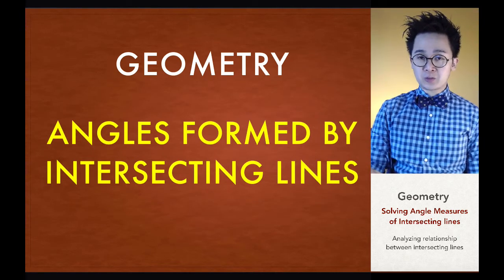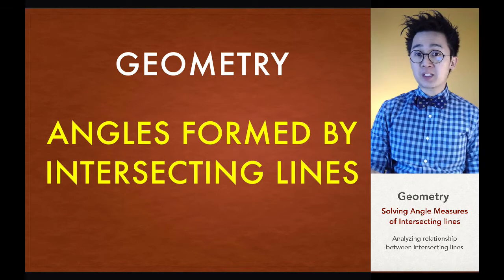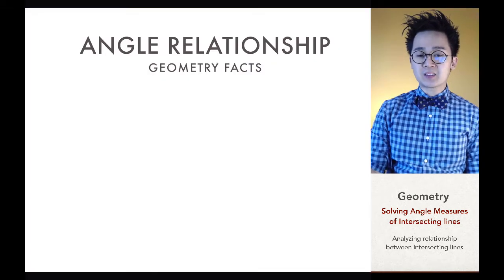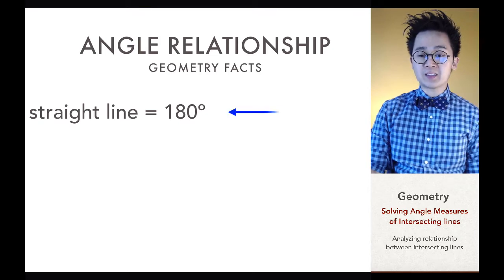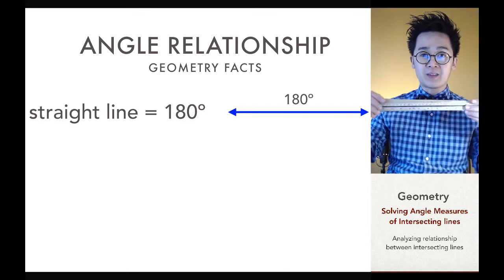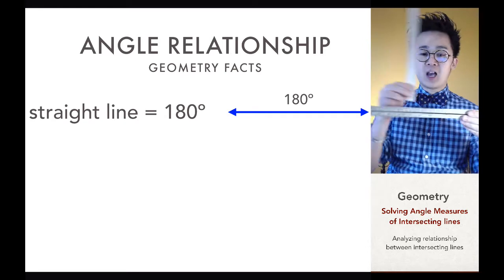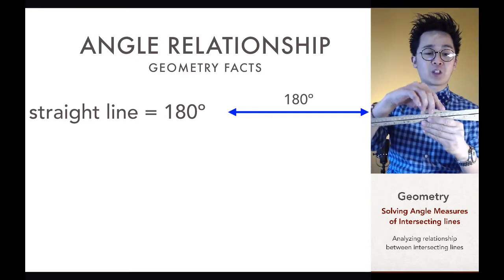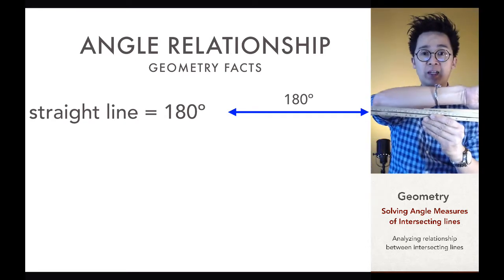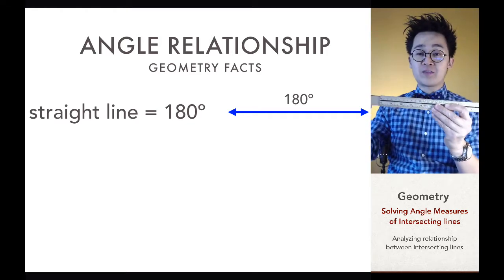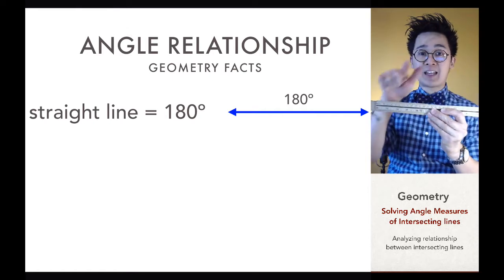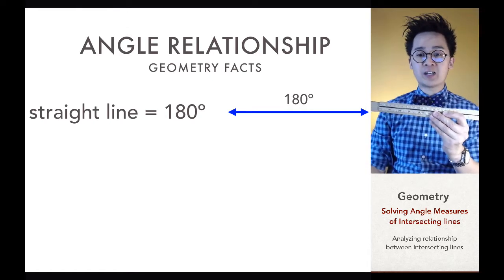The first thing we need to know to work with angle measurements between intersecting lines is some geometry facts, like the measurement of the angle of a straight line. For a straight line, it equals 180 degrees — if we rotate a line from one end to the other, the angle formed is equal to 180 degrees.